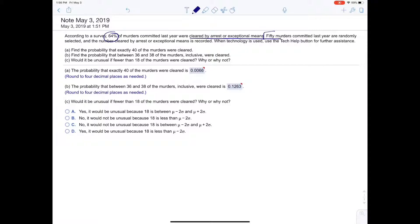50 murders are randomly selected, and the number cleared by arrest or exceptional means is recorded. So there's a random variable X, which stands for the number of murders that were cleared by arrest or exceptional means. So they randomly chose 50, and a number of those are cleared by arrest or exceptional means.